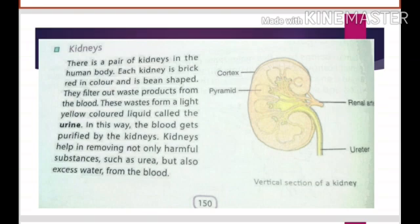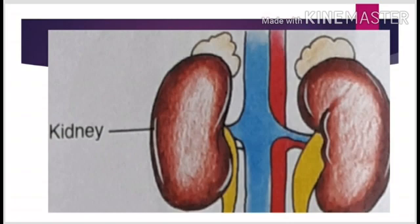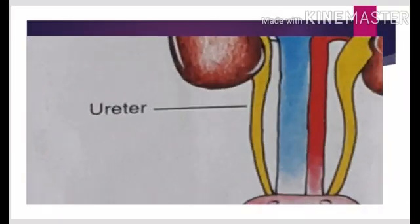Kidneys help in removing not only harmful substances such as urea but also excessive water from the body. The next part of our urinary system is the ureter. Ureters are the two thin-walled urine-carrying tubes. They start from each kidney and open into the urinary bladder. You can see in the picture how these tubes originate from the kidneys and lead to the urinary bladder.